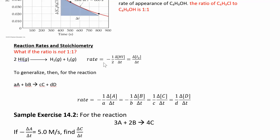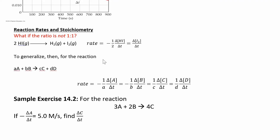The way you can figure this out is you set up this generalized expression for a general reaction — this is how you find the rate. What we're doing is comparing the rate of change of the reactants and the products. It's one over the stoichiometric coefficient times the change in concentration over the change in time, and you do this for each reactant and product. You can do this for the other reactant as well.